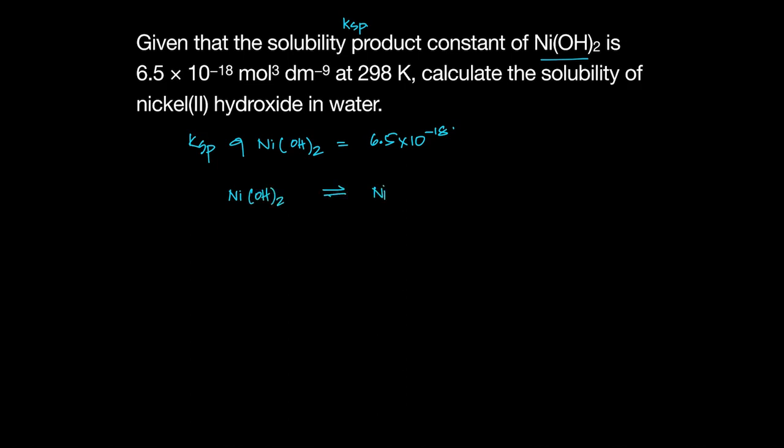I mean, you can do that in your head also, but I like writing it down. It's nickel aqueous and 2 hydroxide aqueous ions. So what that means is if X dissolves, it will give me X and 2X.